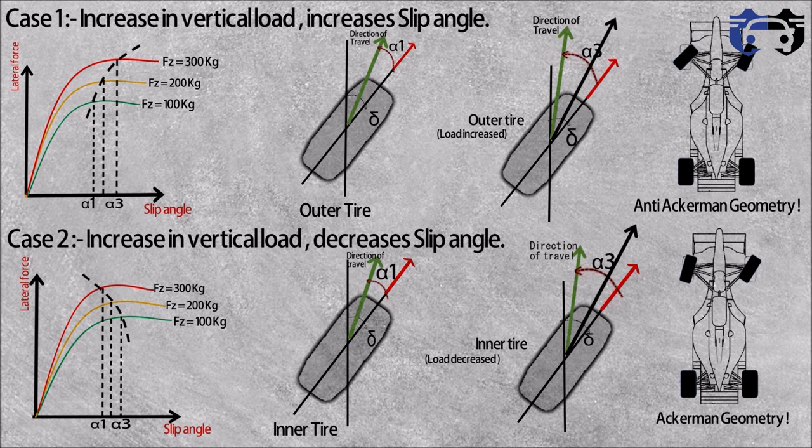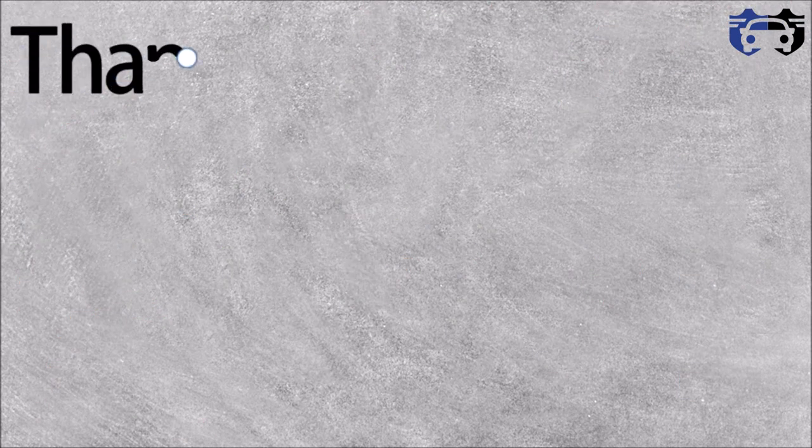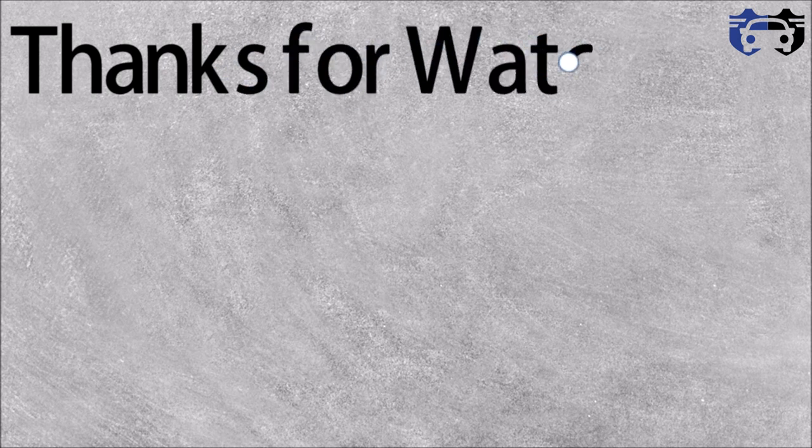So the conclusions are: when the tire load performance curves are similar to Case 1, anti-Ackermann geometry is used. If the tire load performance curves are similar to Case 2, Ackermann steering is used. Thanks for watching. If you have any queries regarding the video, you can comment in the comment box.